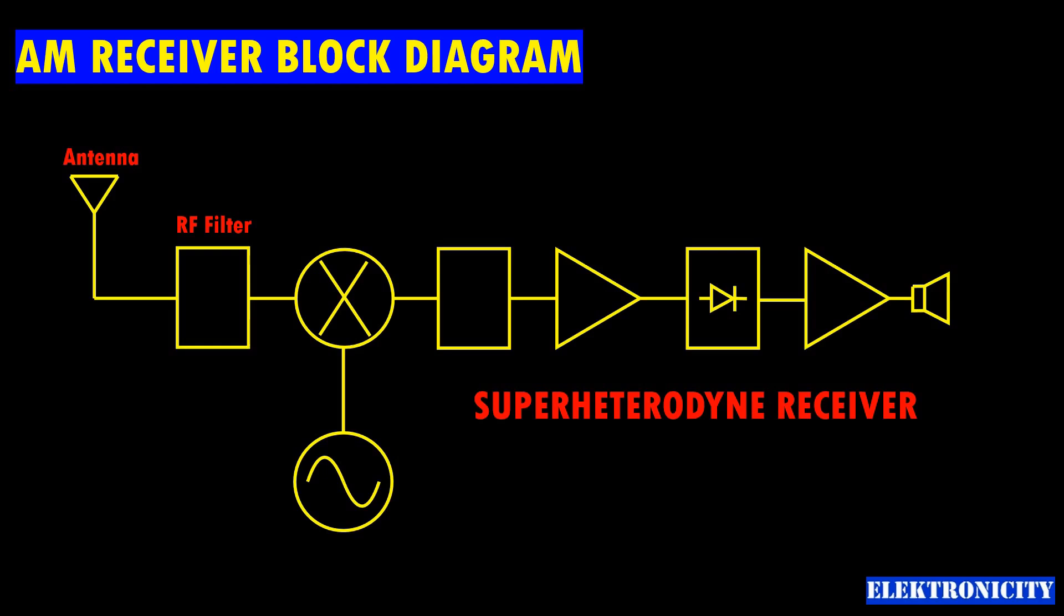The local oscillator: the frequency of a local oscillator is set so that either the sum or the difference of RF signal frequency and the LO frequency is equal to the IF used in the receiver, usually around 455 kilohertz.